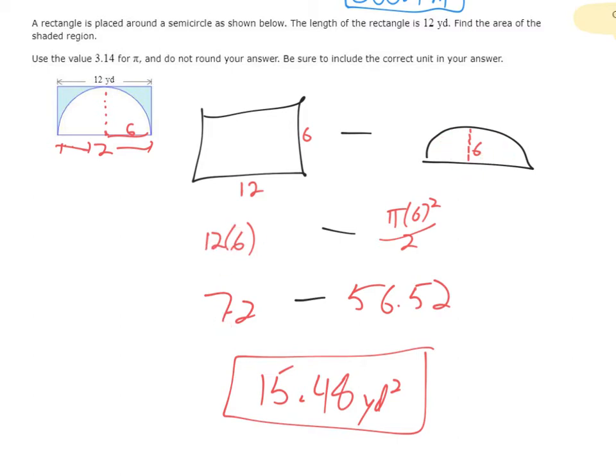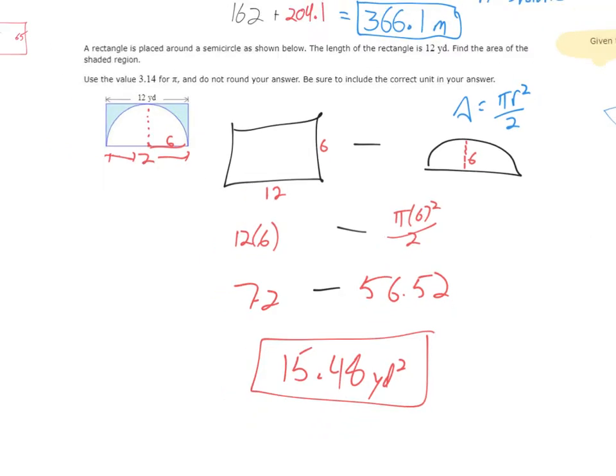So length times width for the rectangle gives me 72. And to find the area of the semicircle, well, area of a circle is pi r squared. But we're taking half of it, so I need to chop that in half. That's why there's this divided two piece. So from here, straight into the calculator, and we get our answer.